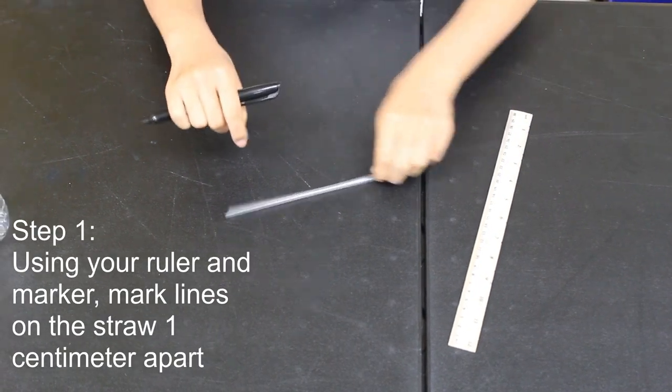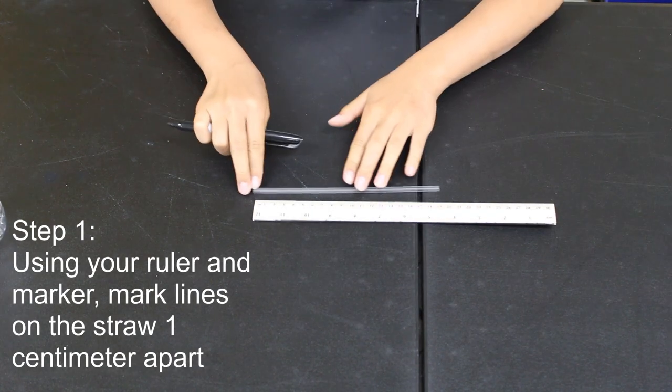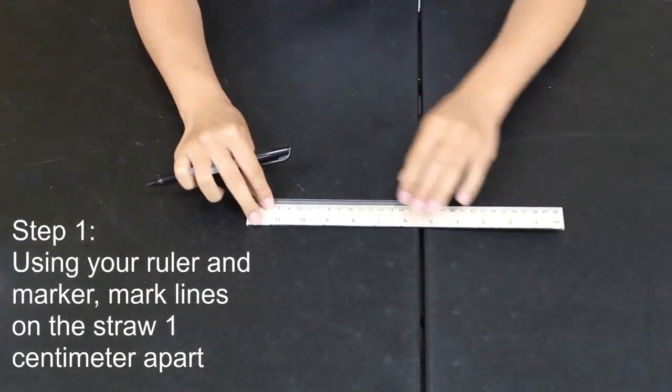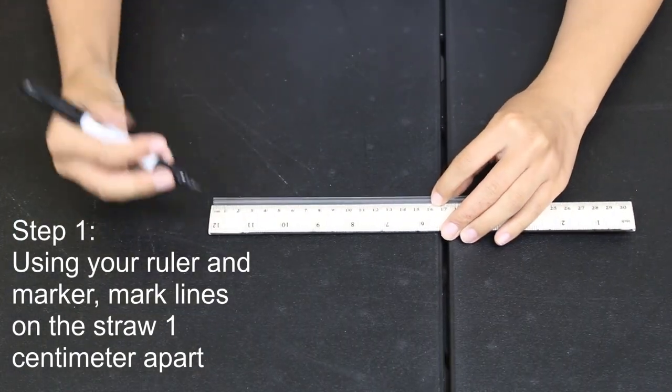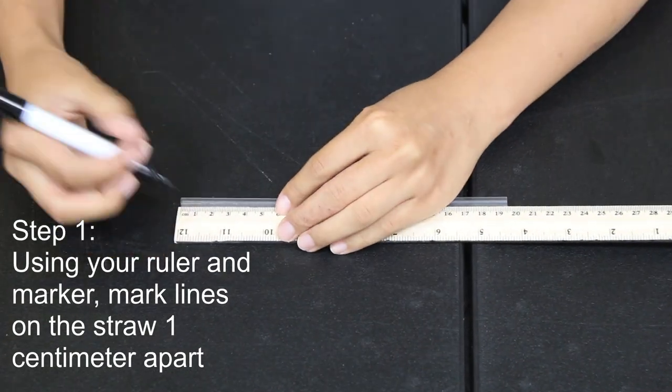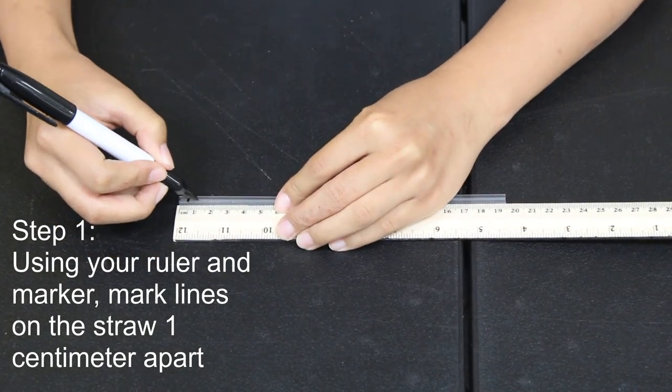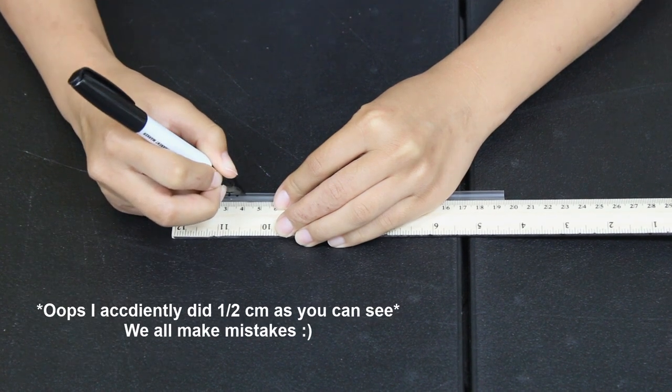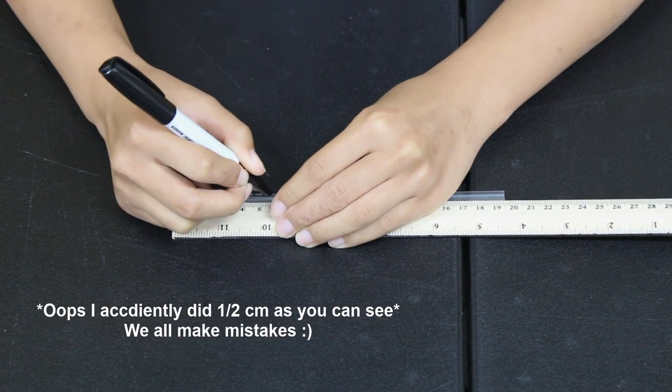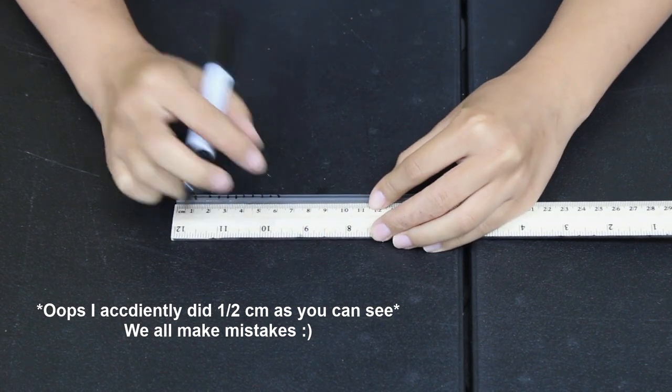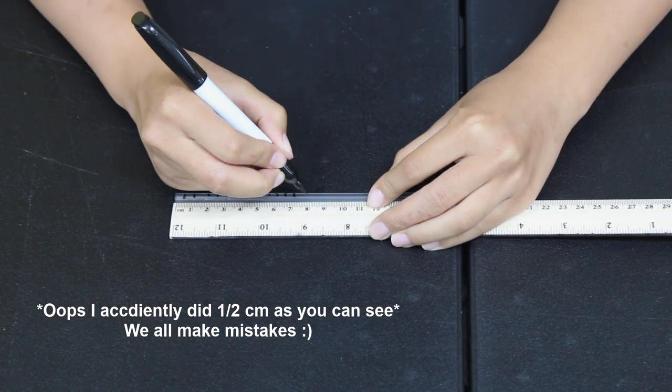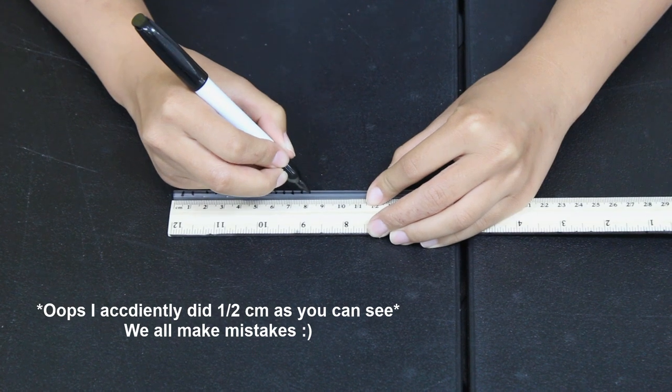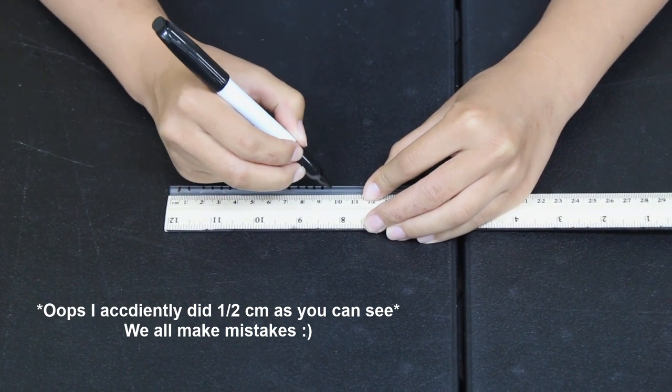For the first step you'll take your ruler, your marker, and your clear plastic straw and you're going to measure out any length that you want. For this activity I chose one centimeter but you're going to go ahead and mark out that length and draw that on your plastic straw. So again I decided to do one centimeter but you can do half a centimeter, three centimeters, three eighths of an inch, whatever distance you want. Just make sure those lines that you draw are the same distance apart.